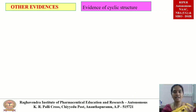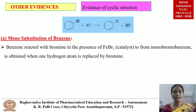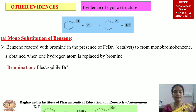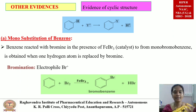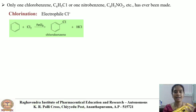We will see other evidences — evidence of the cyclic structure. I will explain two examples: monosubstitution and disubstitution of benzene. For monosubstitution, benzene reacts with bromine in the presence of FeBr3 (a catalyst) to form bromobenzene. The electrophile is Br⁺. The detailed mechanism will be explained in the next lecture. Likewise, only one chlorobenzene and only one nitrobenzene are formed when benzene undergoes substitution reactions.